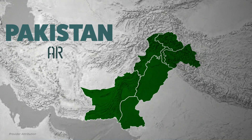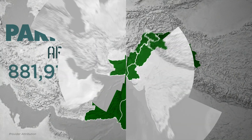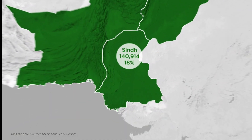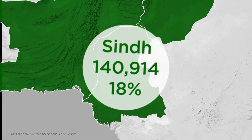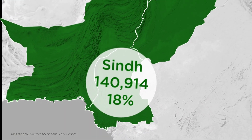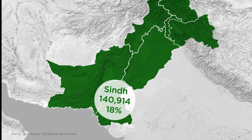Pakistan's total area is 881,913 square kilometers. The total area of Sindh is 140,914 square kilometers.